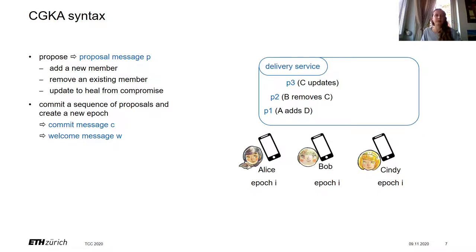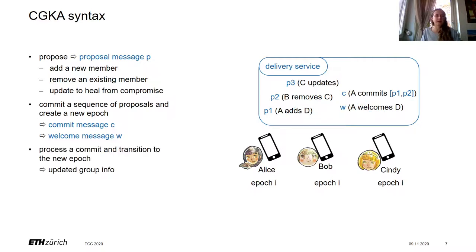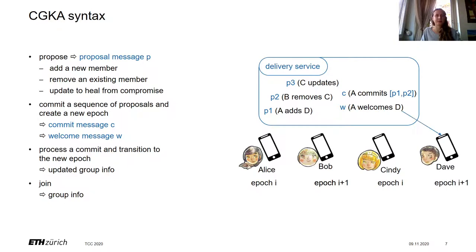A new epoch is created in the commit. Alice commits by collecting a list of proposals — say P1 and P2, but she didn't see P3 — and then sends two messages: a commit message C and a welcome message W. The commit message is for current members to transition to the new epoch; the welcome message is for new members to join. Alice waits to receive her own message back from the network. To transition to the new epoch, parties process the message — Bob processes C and transitions, getting updated group information, and Dave can join using the welcome message.